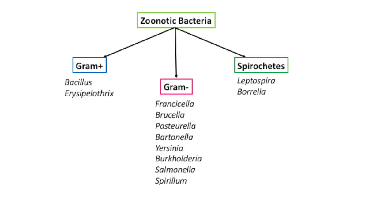Under the gram-negative group we had a subgroup within the non-enterics called zoonotic bacteria. That group only considered gram-negatives, but there are also gram-positives and spirochetes that fall under the zoonotic bacteria group. The gram-positive zoonotic bacteria include Bacillus and Erysipelothrix. The spirochete zoonotic bacteria include Leptospira and Borrelia.